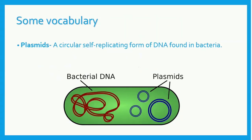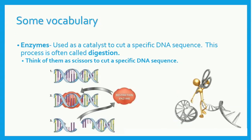First, we need some vocabulary. A plasmid is a circular self-replicating form of DNA found in bacteria. It's important to notice that this isn't the chromosomal bacterial DNA, pictured here in red. There are also enzymes. You might have encountered this term with other biological processes, but here, enzymes act as a catalyst to cut at specific DNA sequences. This process of DNA cutting is also called digestion. To help understand how enzymes work, you could think of them as molecular-sized scissors specialized to specific DNA codes.